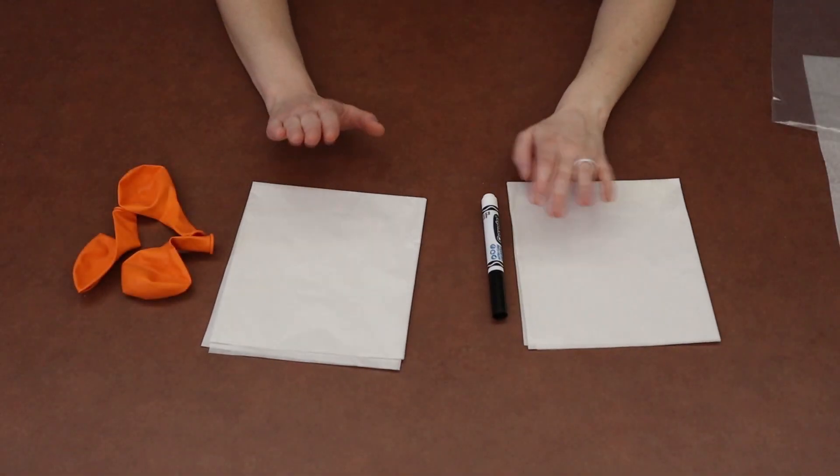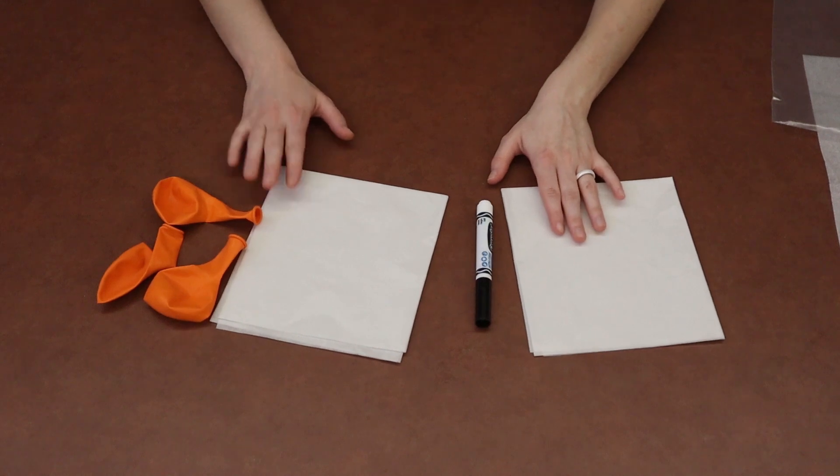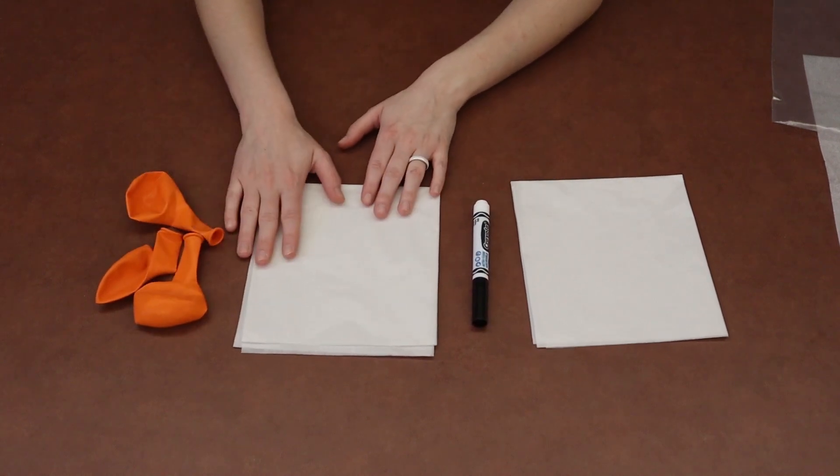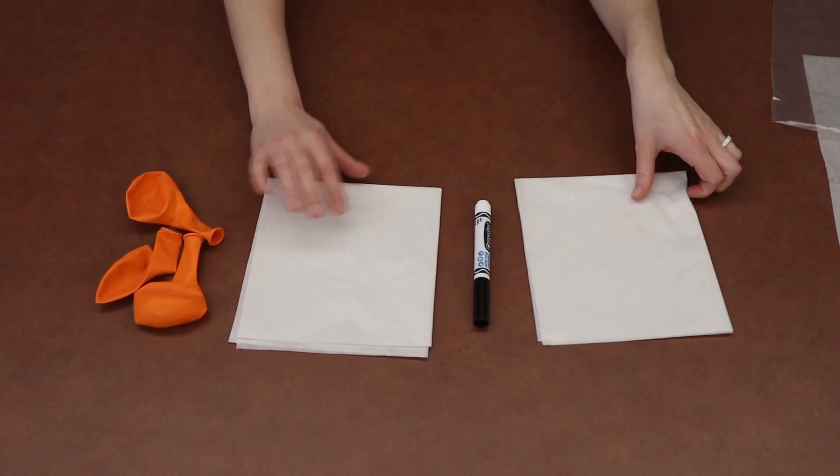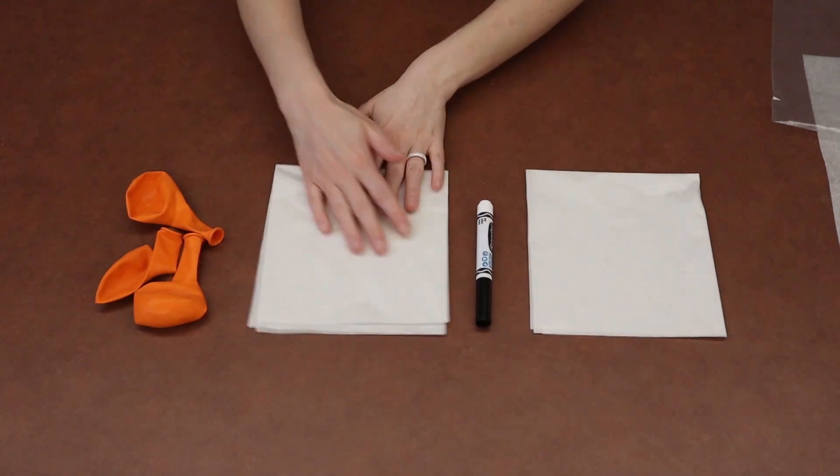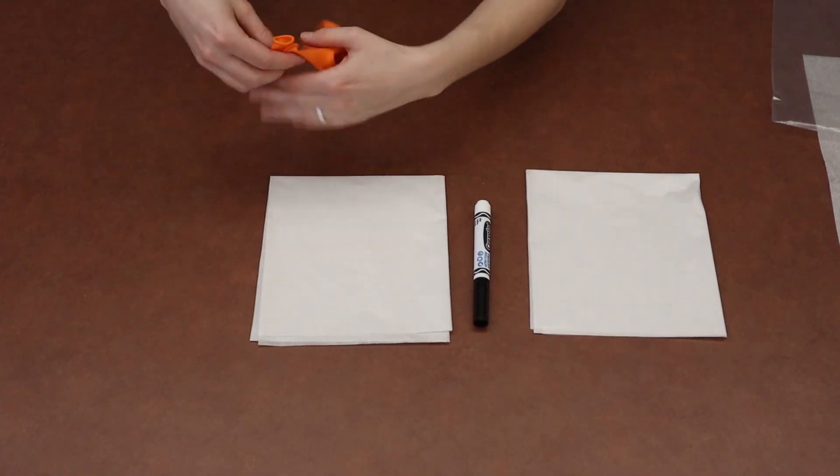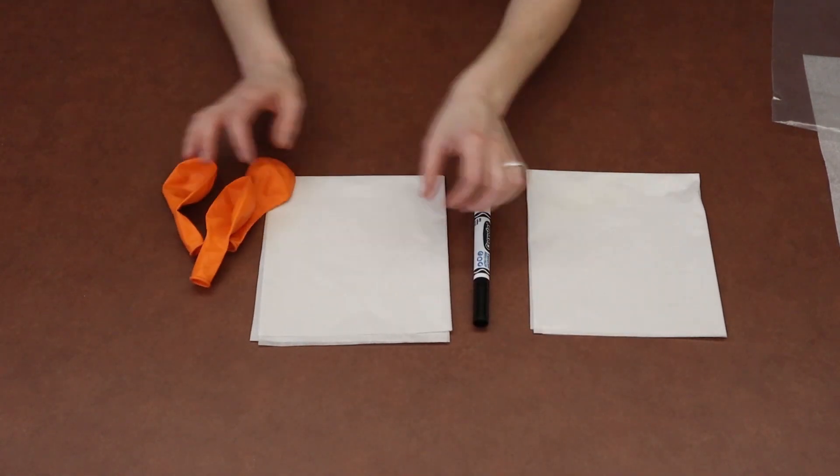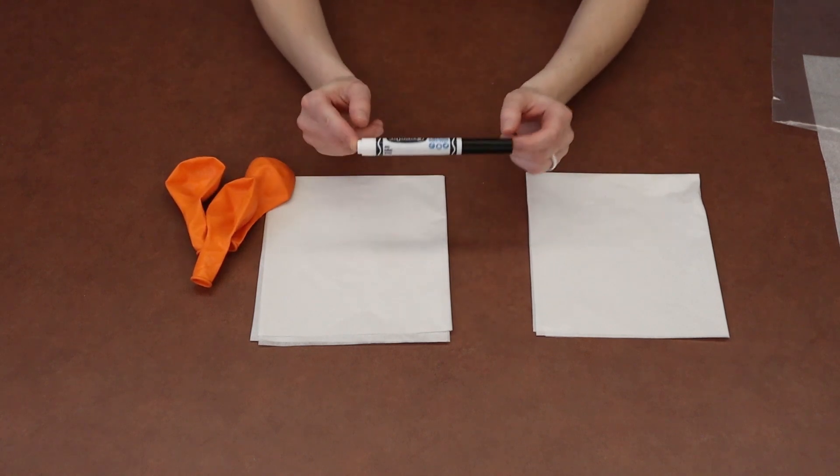Okay, so what you see here on the table is what you received in your Take and Make bag from the library. You should have two sheets of white tissue paper and three orange balloons along with one black marker.